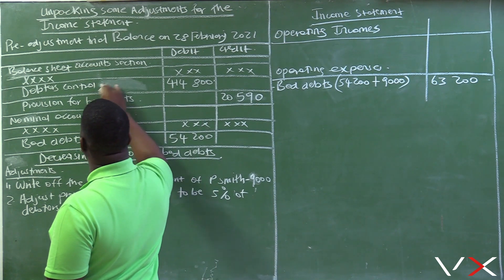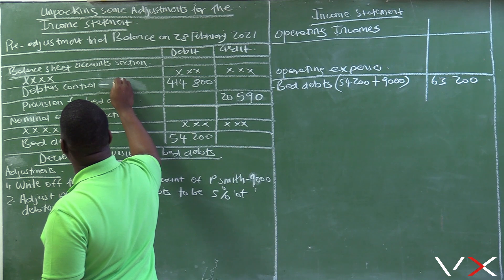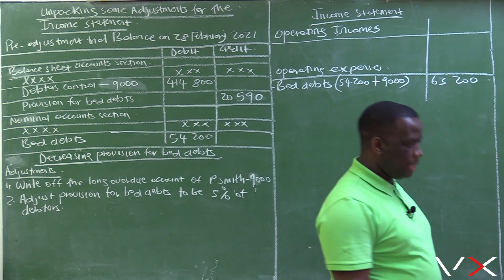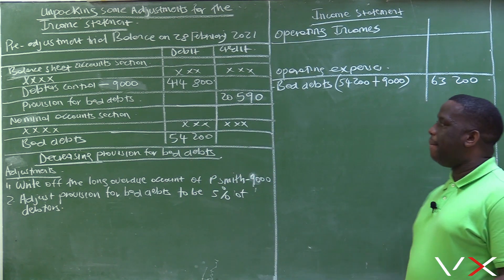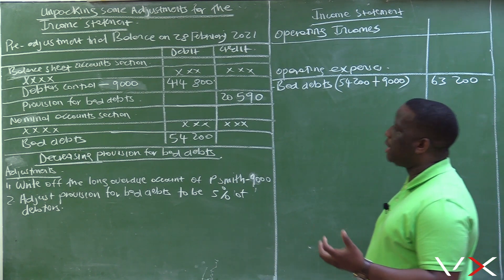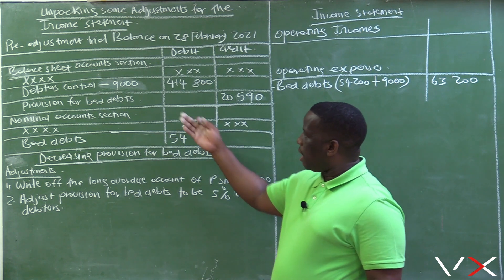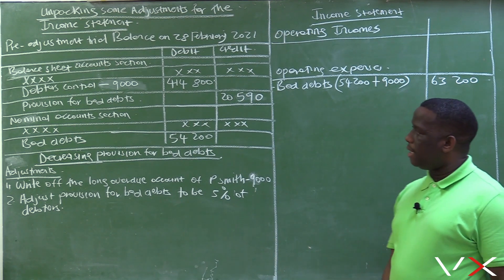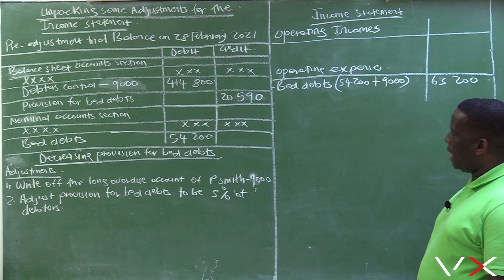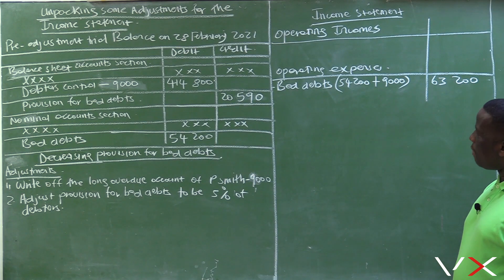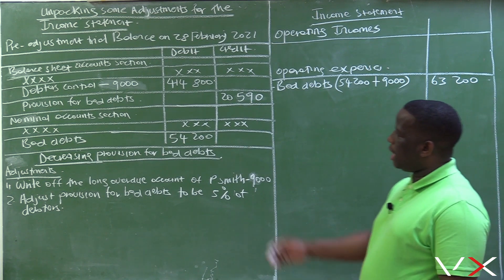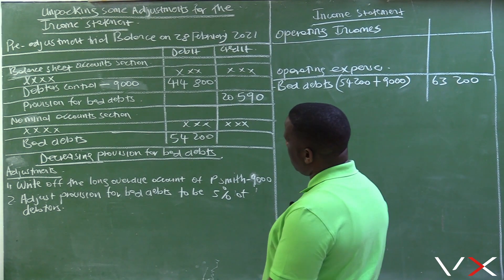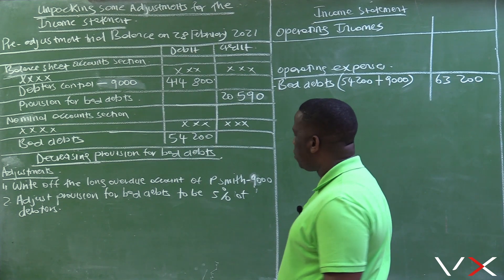Note in your question paper that debtors control will also have to decrease by 9,000. When you are writing off bad debts, the amount you expect to receive from debtors is reduced. This 9,000 is now recorded under bad debts — people who are not paying us — so it has become an expense, which means debtors control decreases by 9,000. Adjustment number two: adjust provision for bad debts to be 5% of debtors.